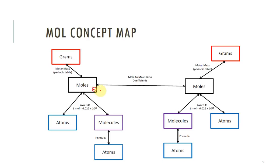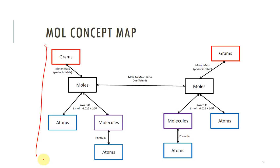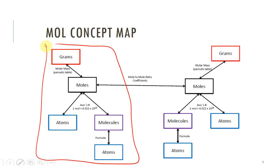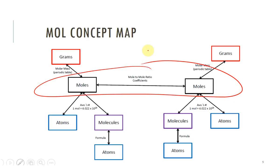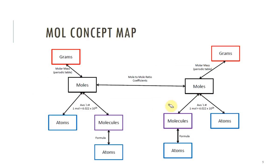Because coefficients tell us how much of this and how much of that we need, we can use them to convert between two substances. In the last video we dealt with just part of the mole concept map. We can now look at adding a whole second side by using the coefficients. We are not going to be balancing equations on this exam — that's done. We're going to use a balanced equation and calculate how much of something is needed.